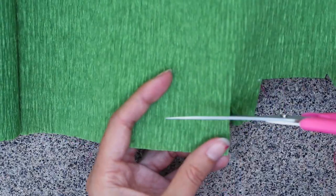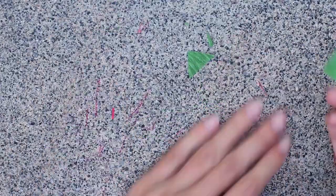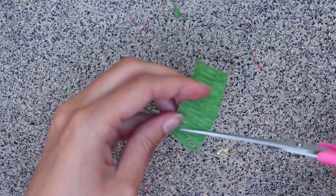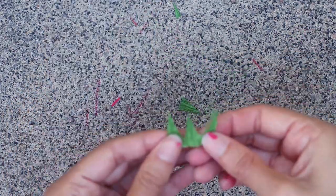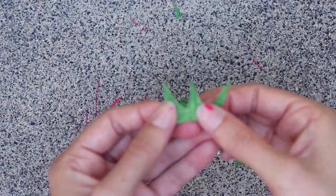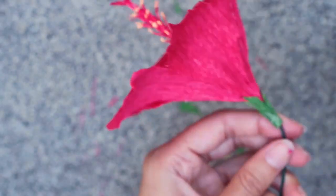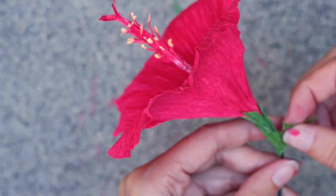Cut another rectangle of green crepe paper. I'll be cutting out three triangles again, but this time I want them to be thinner and taller. So it looks like this.